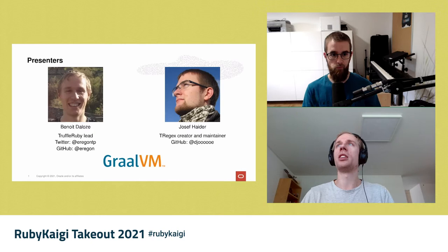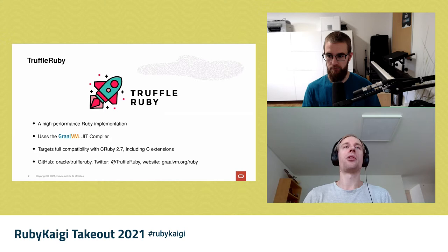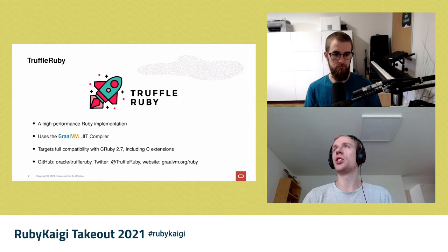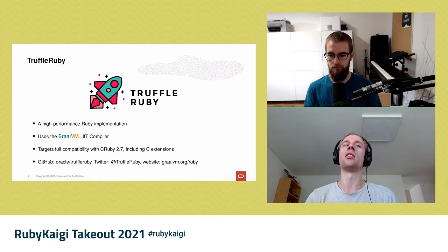If you don't know TruffleRuby yet, it's a high-performance Ruby implementation. It uses the GraalVM JIT compiler, which is what gives it good performance, and targets full compatibility with CRuby 2.7, including C extensions. The idea is you can just take your app and run it on TruffleRuby without changing anything. It's open source on GitHub and we also have a Twitter and more recently a website.